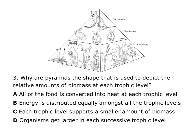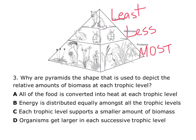Question three asks: why are pyramids the shape used to depict the relative amounts of biomass at each trophic level? Remember, producers have the most and it gets less until you reach the top where they have the least — that's why we use a pyramid. Now let's see which answer choice describes that.